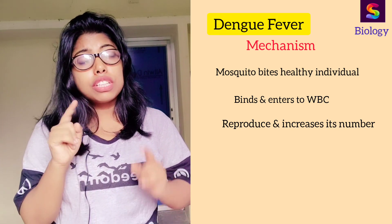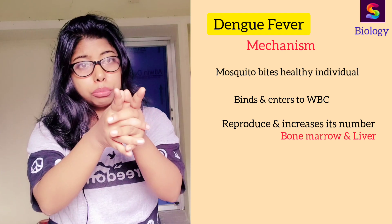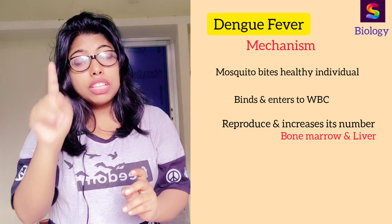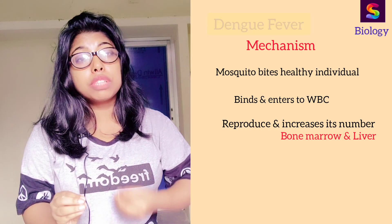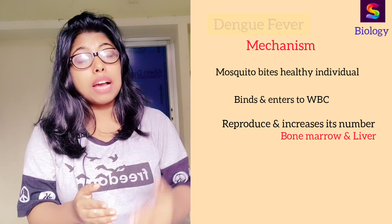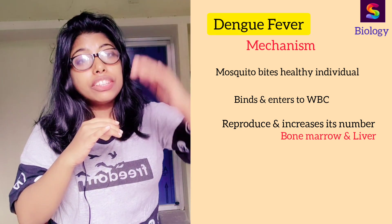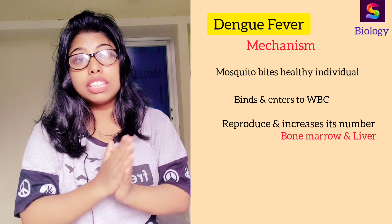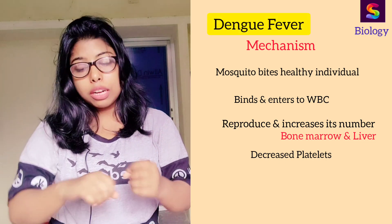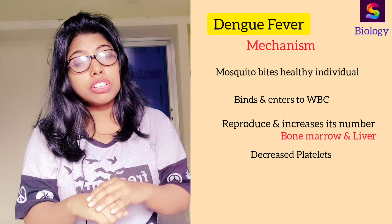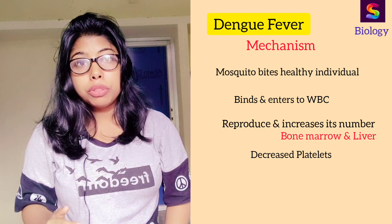After the virus increases its number, severe infection occurs in the human body. It then targets the most important organs — first the bone marrow, and next the liver, which is the largest gland in our body. When it affects the bone marrow — the organ that produces platelets — if severe infection occurs and the bone marrow is affected, the production of platelets will decrease.